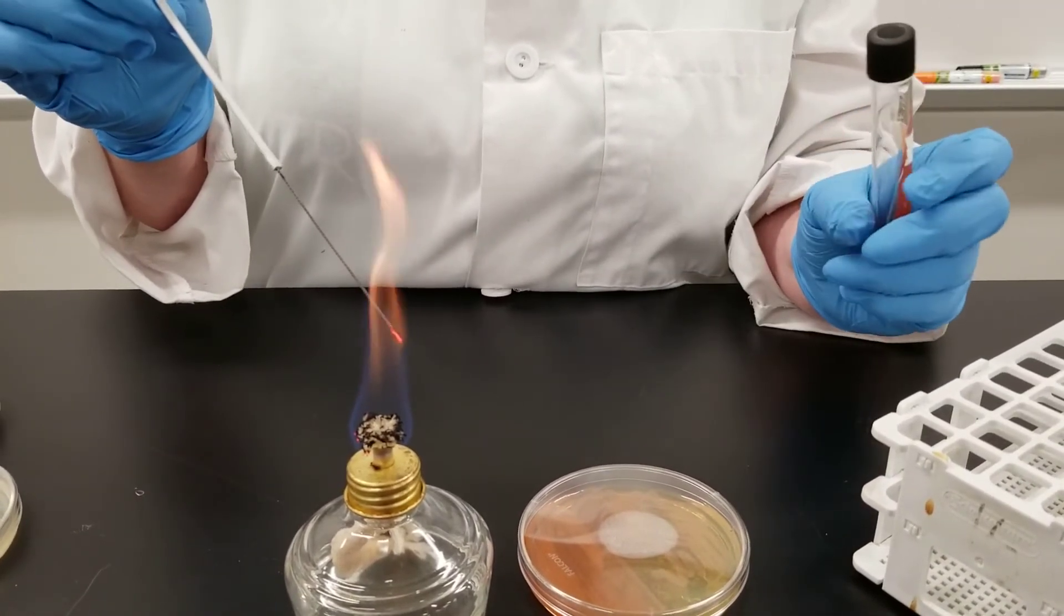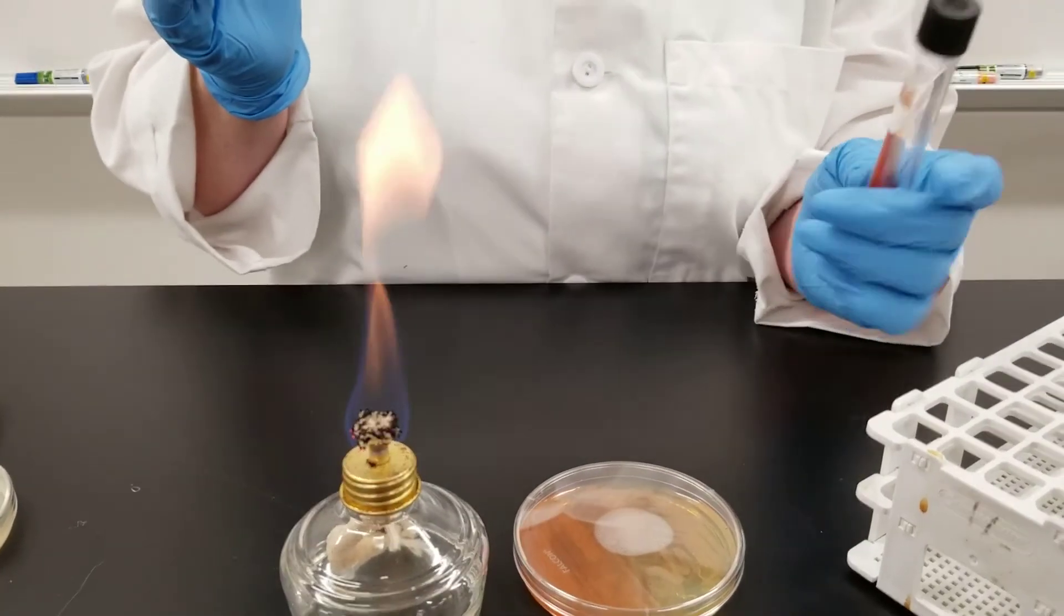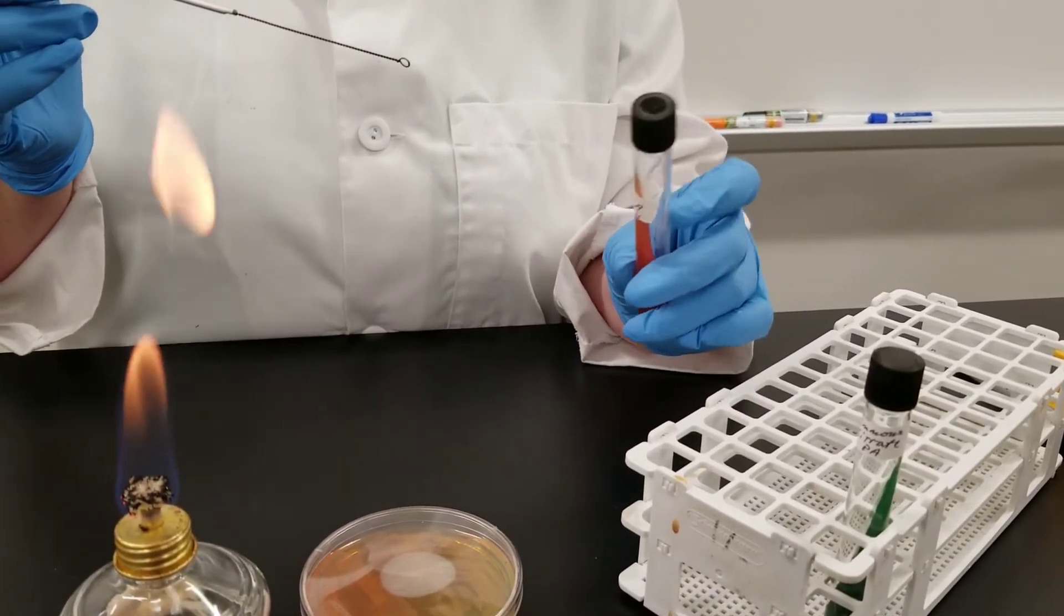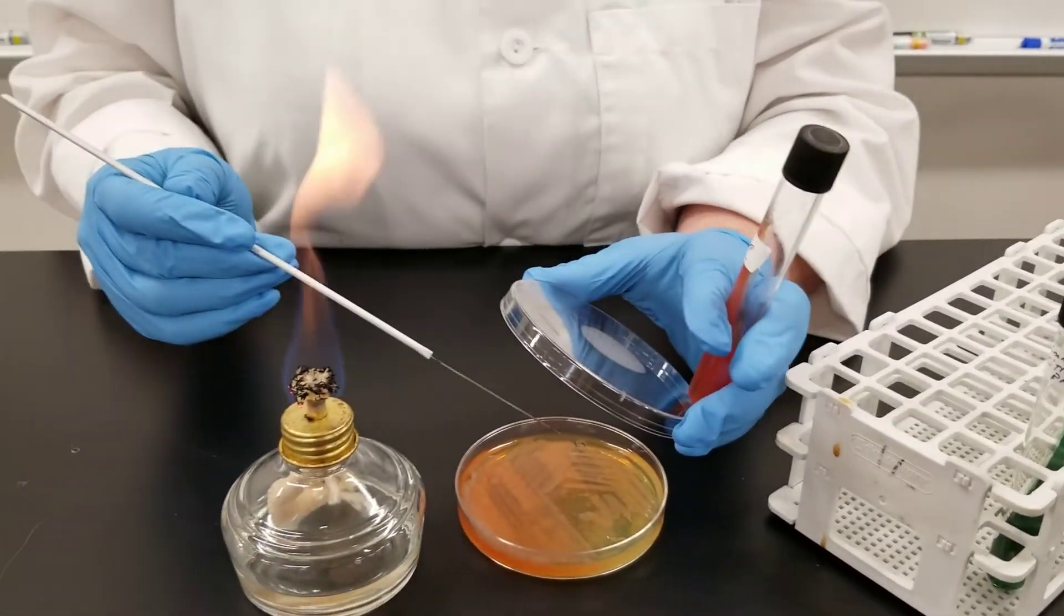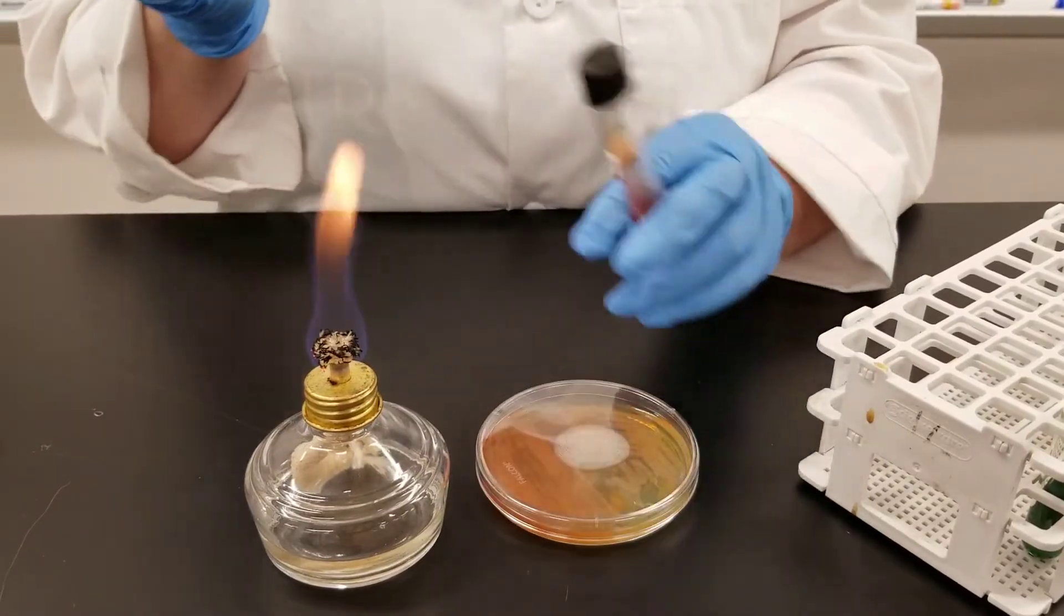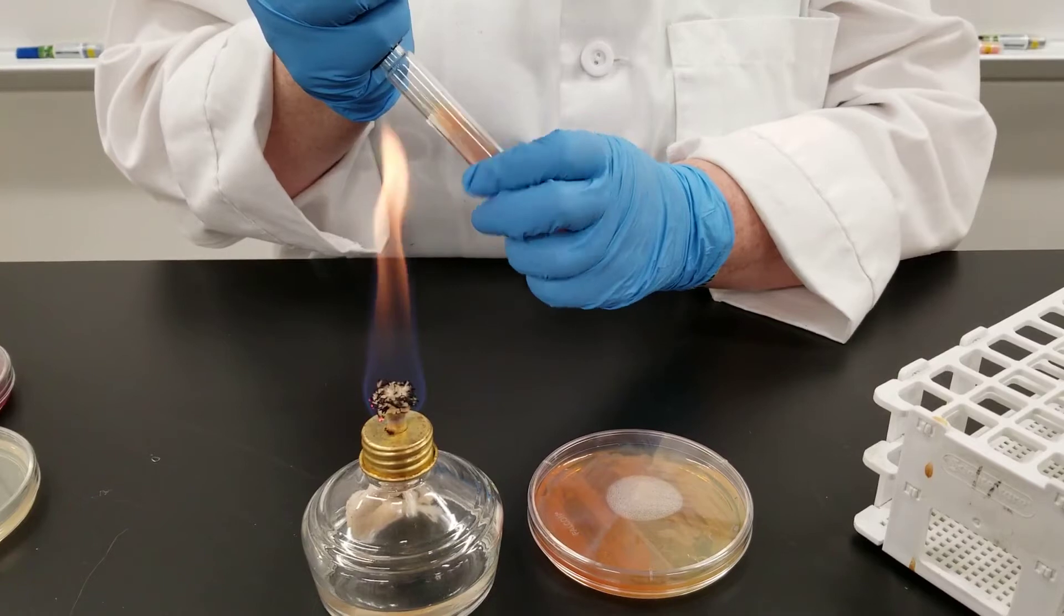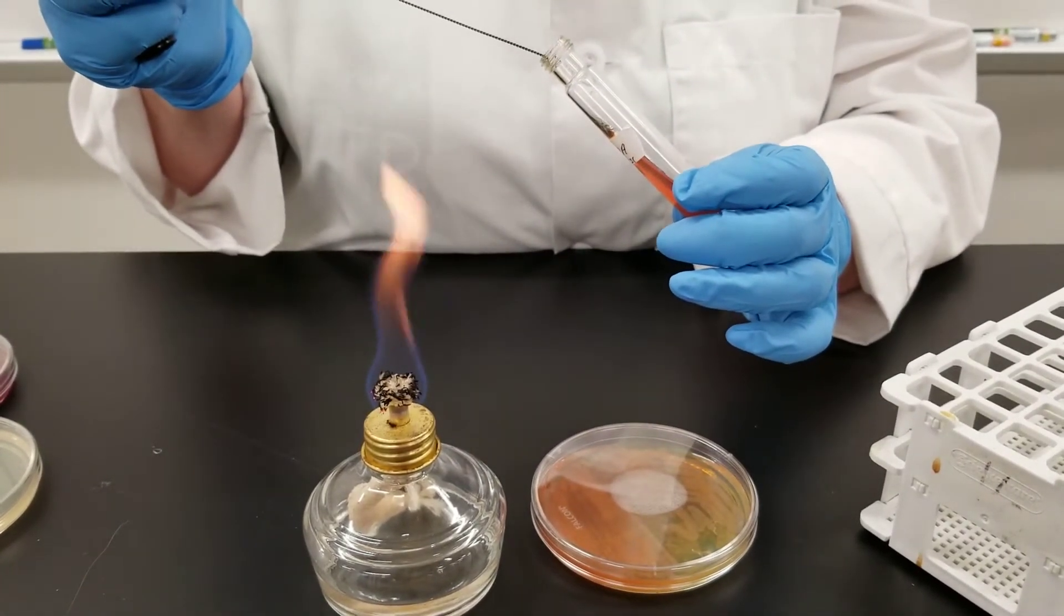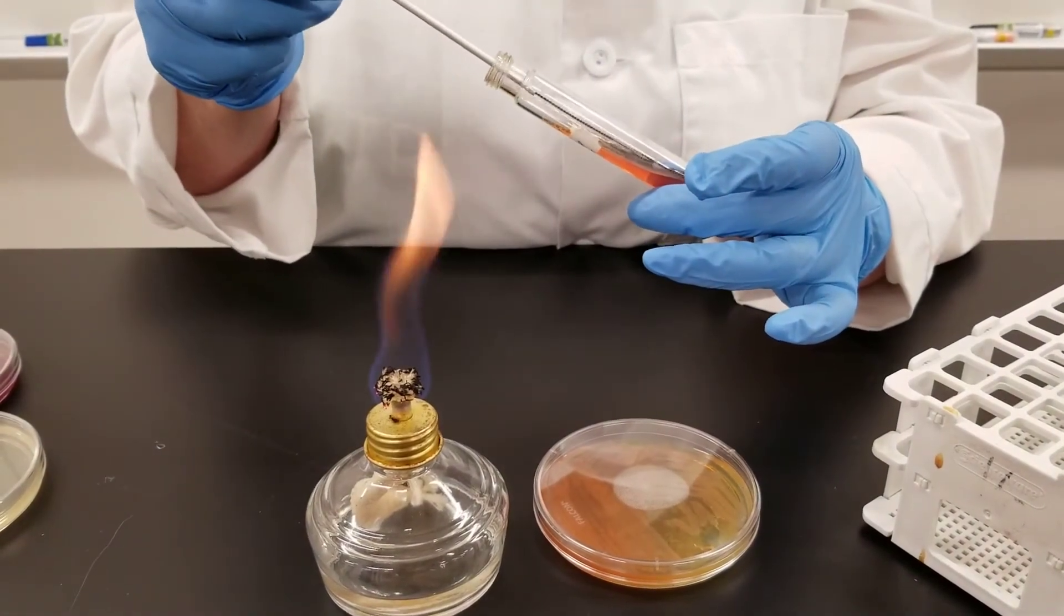The next tube that we're going to inoculate, this is a little different than what you may be used to. This is called the TSI, triple sugar iron plate. We initially will inoculate the way you're used to, pull a sample off of our stock plate. As always, flame the loop. You are going to streak up the slant like we just did in the previous tube.